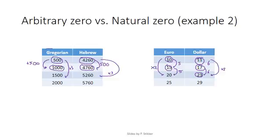So again, with the year, the Gregorian calendar, the year zero was somewhat chosen at random. They tried to use the date of birth of Jesus Christ. While with euro and dollar, zero really means the absence of any currency or money. So that's why the year is interval and money can be considered ratio.